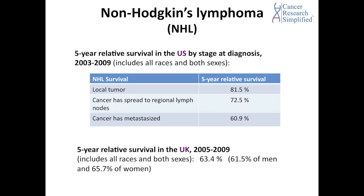Non-Hodgkin's lymphoma has a relatively high survival rate. Looking at the five-year relative survival rate in the US by stage of diagnosis between 2003 and 2009, including all races and both sexes: for localized tumor, the five-year relative survival was 81.5%; when cancer had spread to regional lymph nodes, 72.5%; and when cancer had metastasized, 60.9%. In the UK between 2005 and 2009, the five-year survival rate was 63.4% overall — 61.5% for men and 65.7% for women.